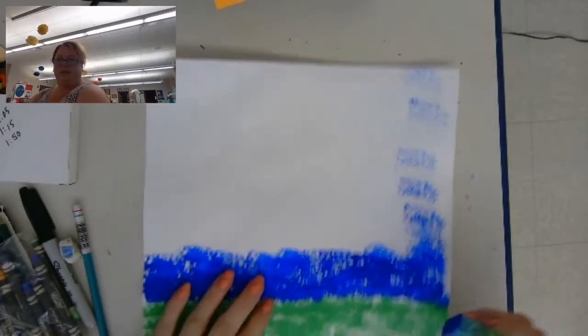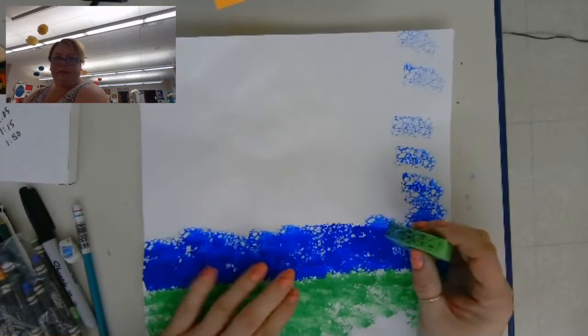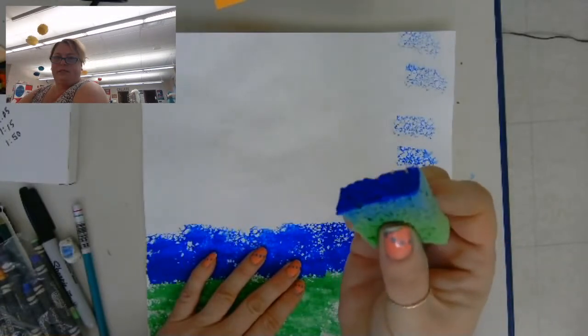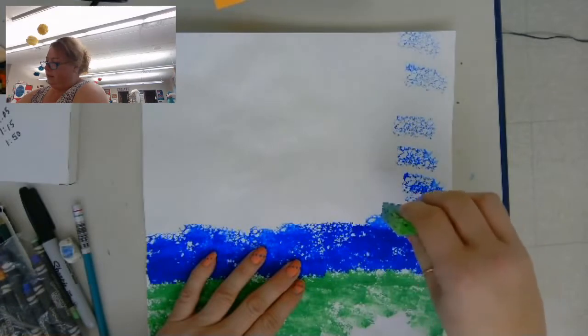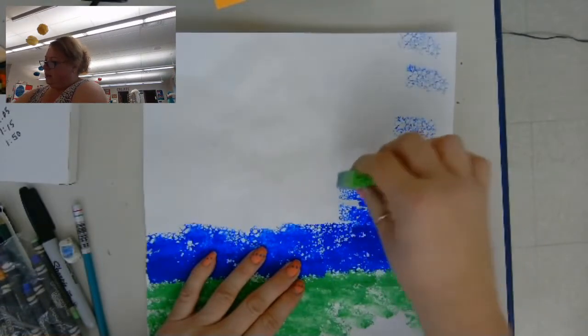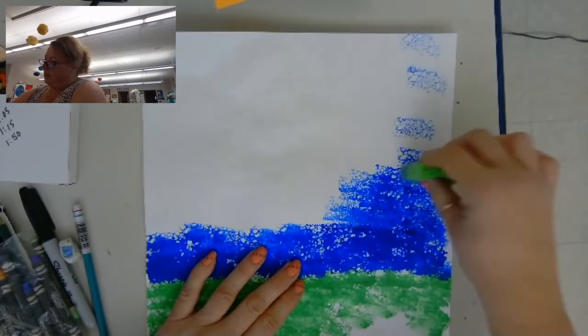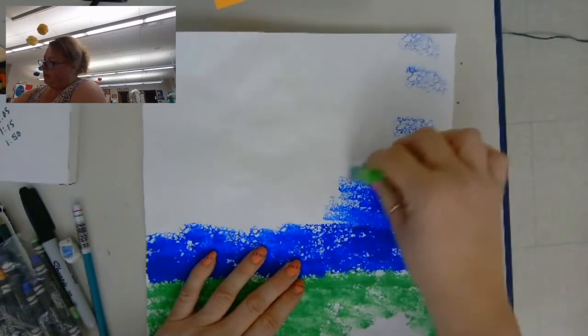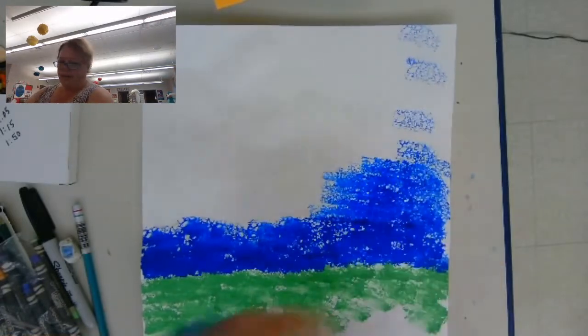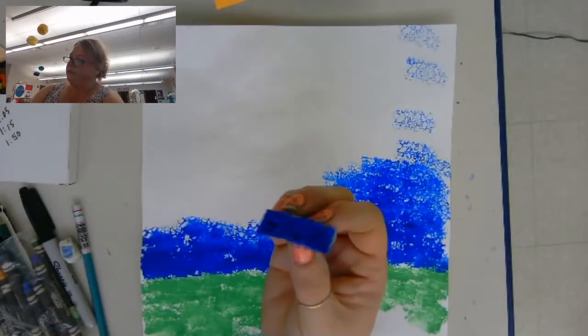So this is called dabbing the paint. So I dipped one skinny end of my sponge in the paint and now I'm just dabbing it onto the paper. And it gets these cool designs because the sponge has holes in it.